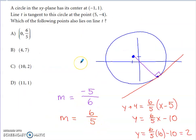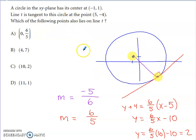The last and toughest question: a circle in the XY plane has its center at (−1, 1). Line T is tangent to the circle at the point (5, −4). A tangent line hits the circle at exactly one spot — that's the red line sketched here. There's geometry to work through: the line segment connecting the center to the edge of the circle is a radius and must be perpendicular to the tangent line.